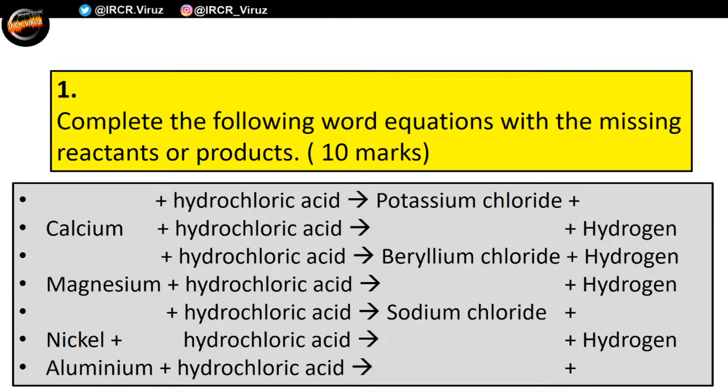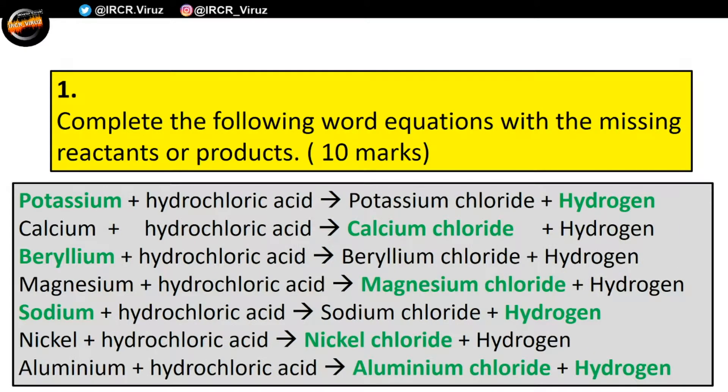Task number one: complete the following word equations with the missing reactants or products. That is 10 marks — you're going to have to find the missing words in those equations. As always, you can pause the video to get your answers. Hopefully you got most of those right and we're going to go straight to the answers.